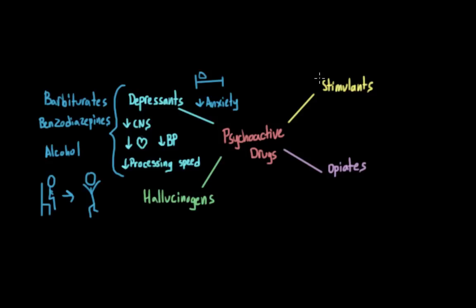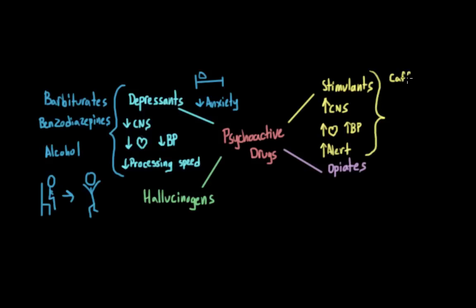The next class of drugs are stimulants. And if depressants depress our central nervous system functioning, stimulants excite it — they stimulate our central nervous system. They increase our heart rate and blood pressure and increase our alertness, so when people take them they feel more awake, alert, and energetic. But they can also make people really nervous and jittery and unable to sit still. You are probably very familiar with one legal stimulant in particular, and that is caffeine — the part of Coke, Pepsi, and coffee that helps keep us awake.